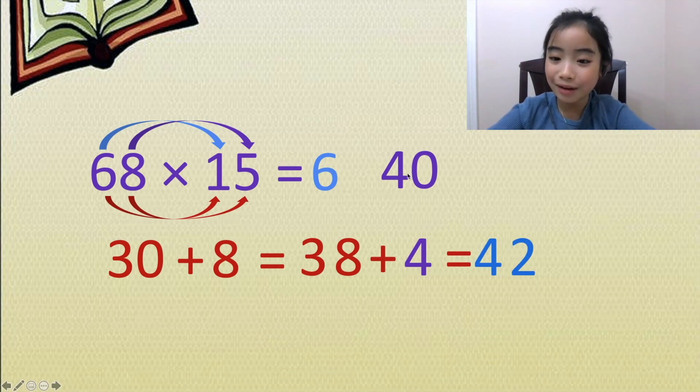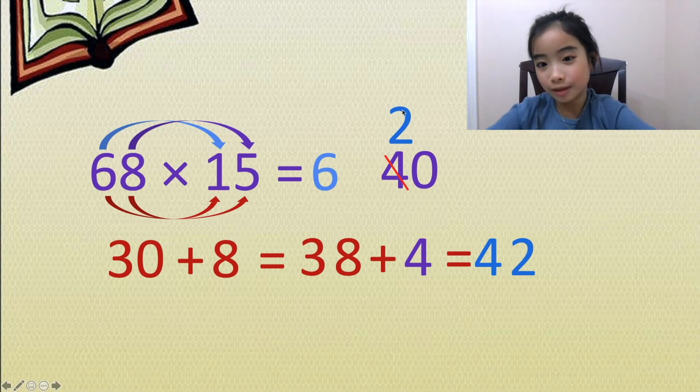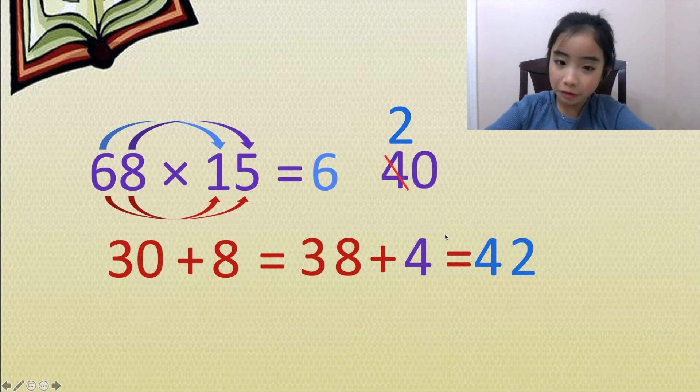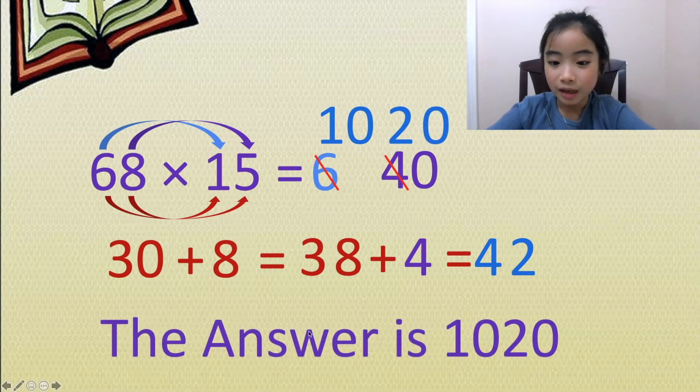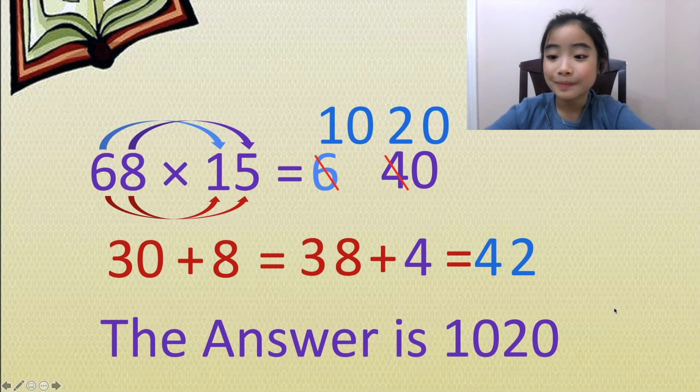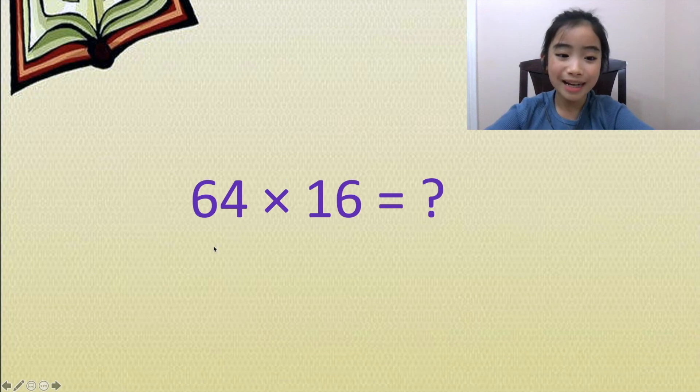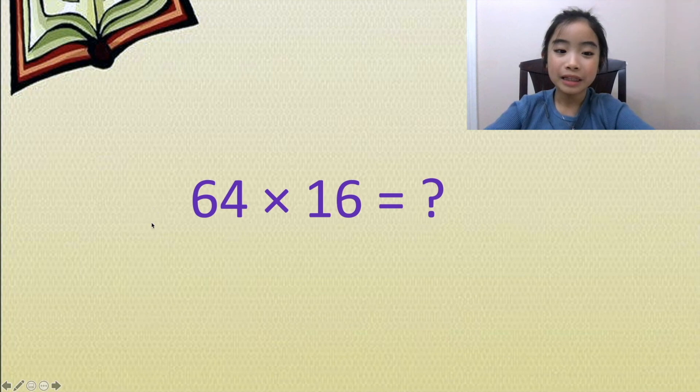We cross the 4 out and we put the 2 on top. So we have 42, and 4 plus 6 equals 10. We cross the 6 out and we put the 10 on top. The answer is 1020. And now for the bonus question. What is 64 times 16? You can use the same method, but I'll leave it for you to figure it out.